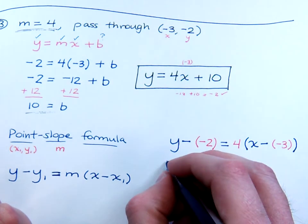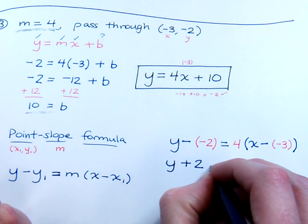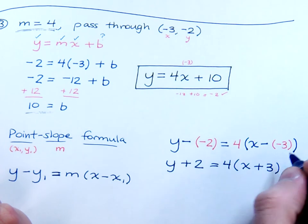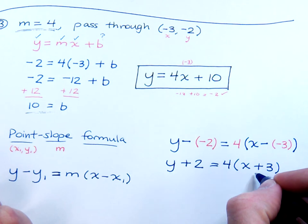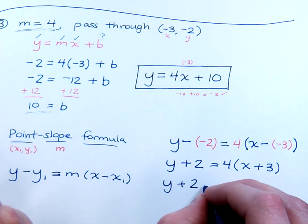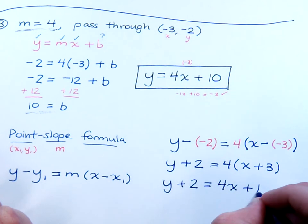Alright, so let's check this out. We have y, that's going to become a positive 2, equals 4 times x plus 3. Of course, minus negative 3 is going to give you the positive 3. Let's distribute on the right side of the equation. So, y plus 2 equals 4x plus 12.